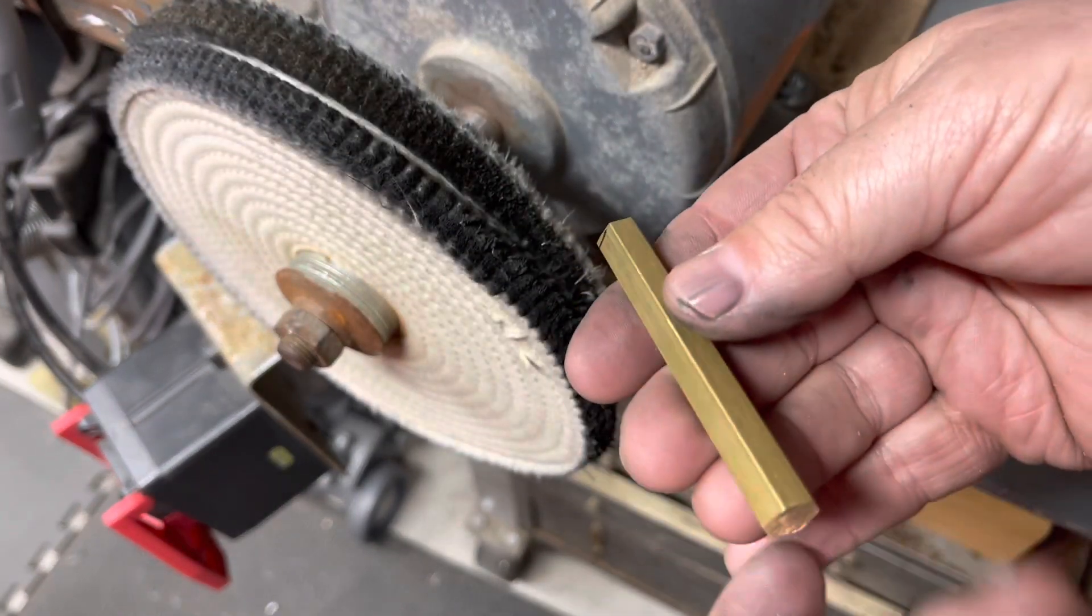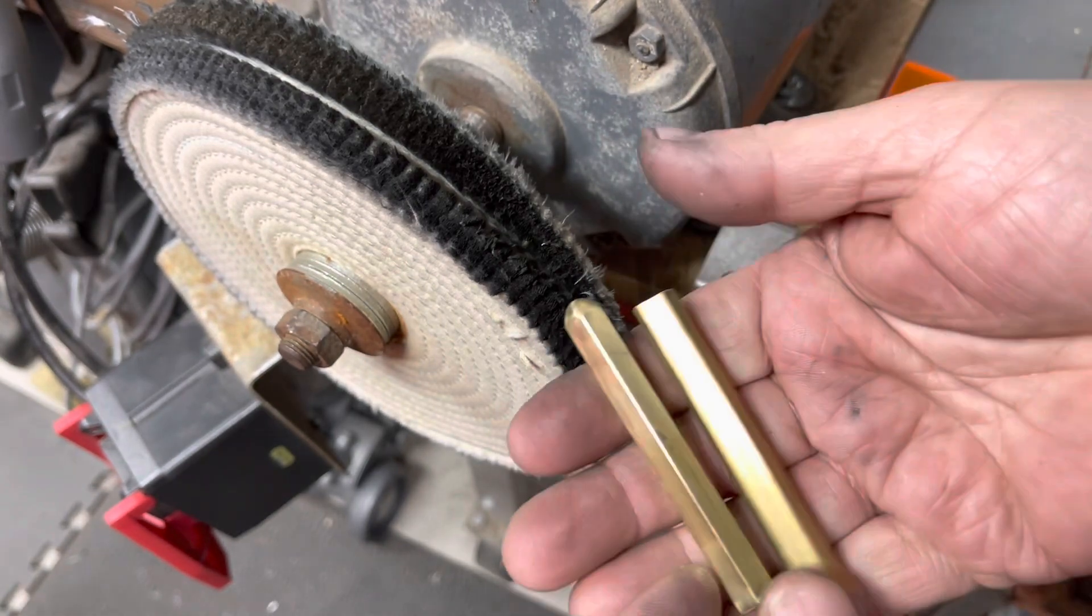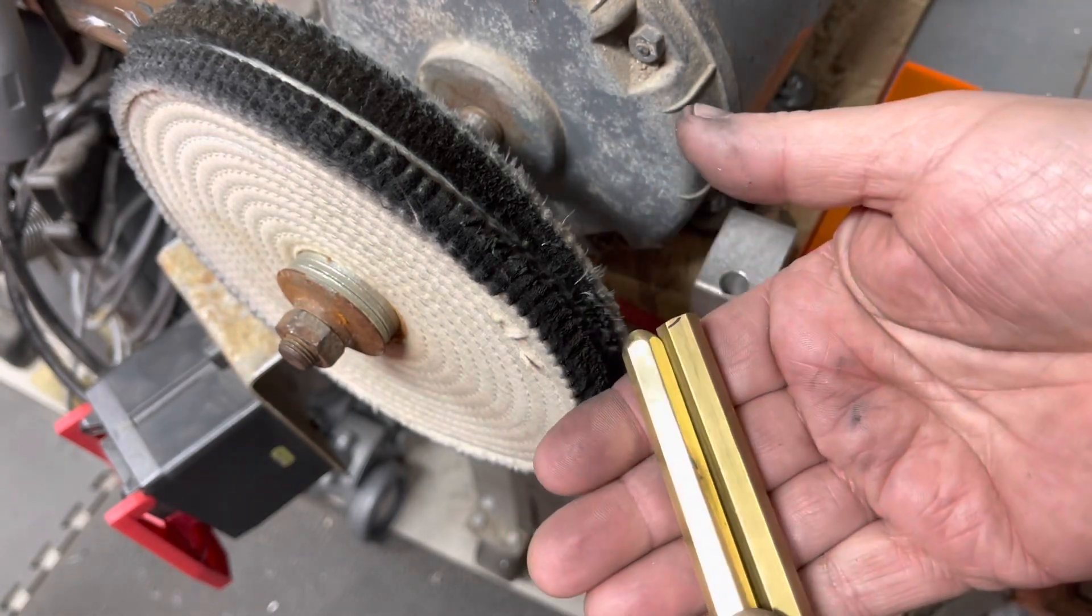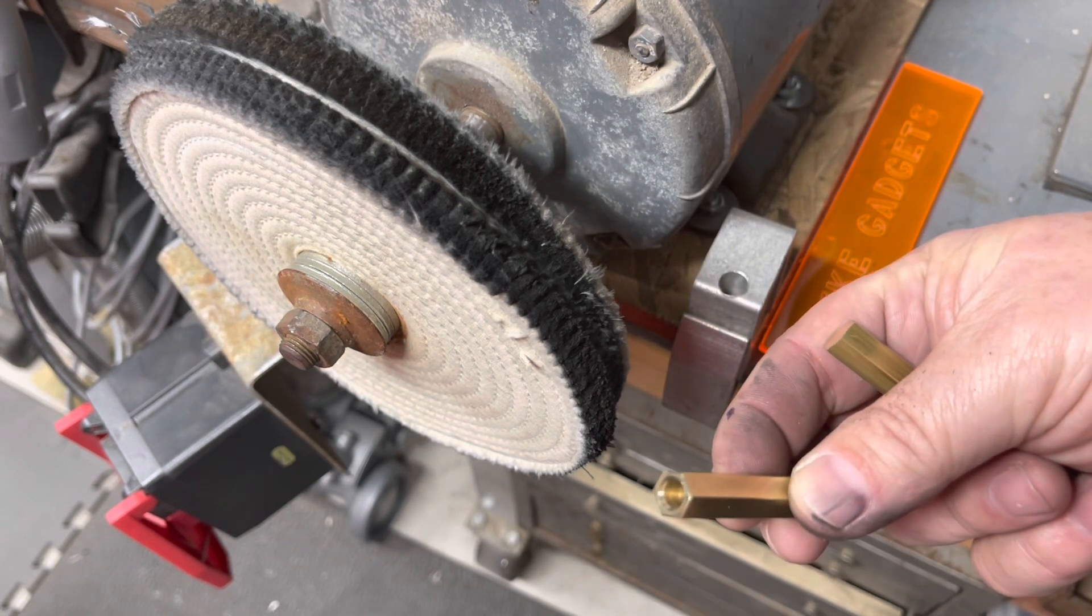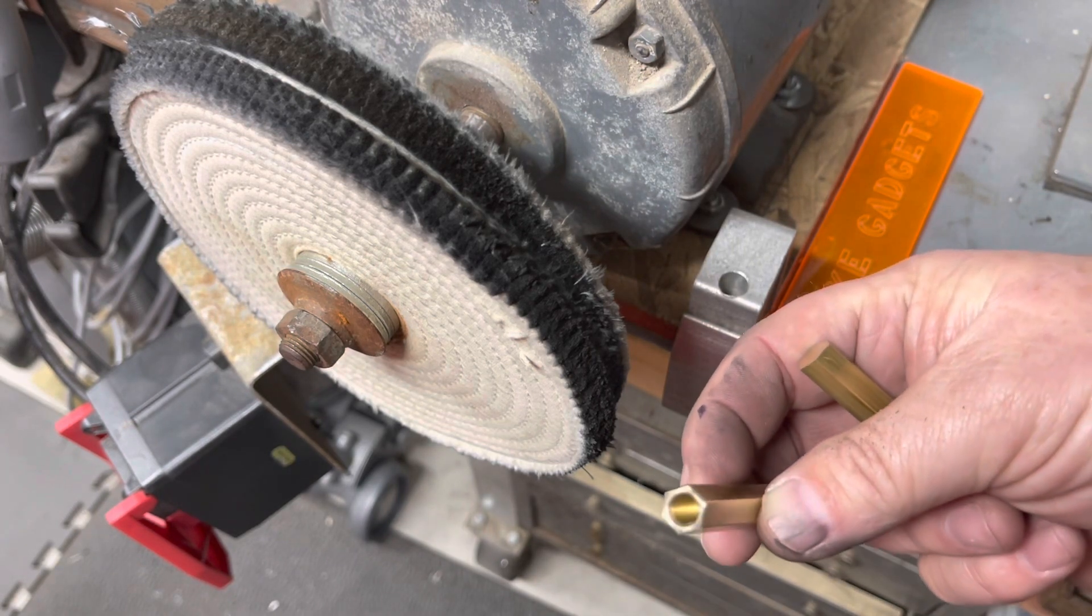Here's the before I polished it, what it looks like, and here's after. Pretty nice difference. Let's go over to the vise and we'll press in the hex part and a little piece of rubber.